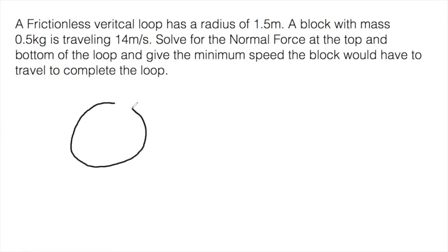So this is a circle not drawn to scale and what it has is a mass that's traveling around the vertical loop with a V tangent to the circle equal to 14 meters per second. Also given is the radius of this circle is 1.5 meters. That was given right here. Also, the mass of the block is 0.5 kilograms. That was given right here.